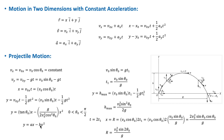When air resistance is neglected, the trajectory of the projectile is always a parabola. Let's now calculate the time t₁ it takes the projectile to reach maximum height, the maximum height h_max, and the range R, which is the maximum displacement along the x-axis.